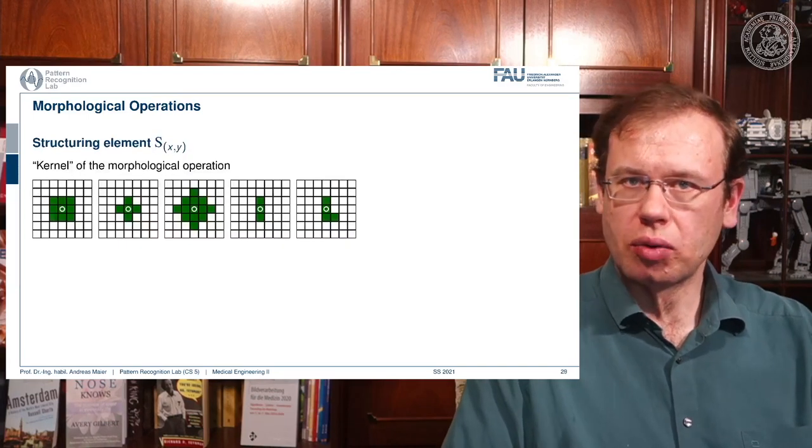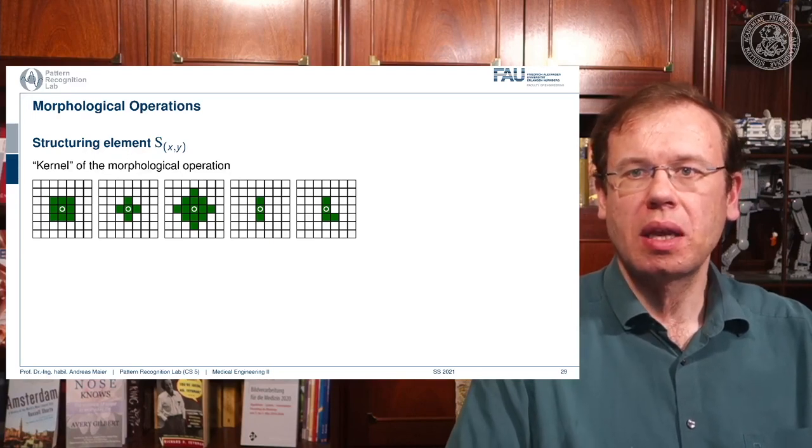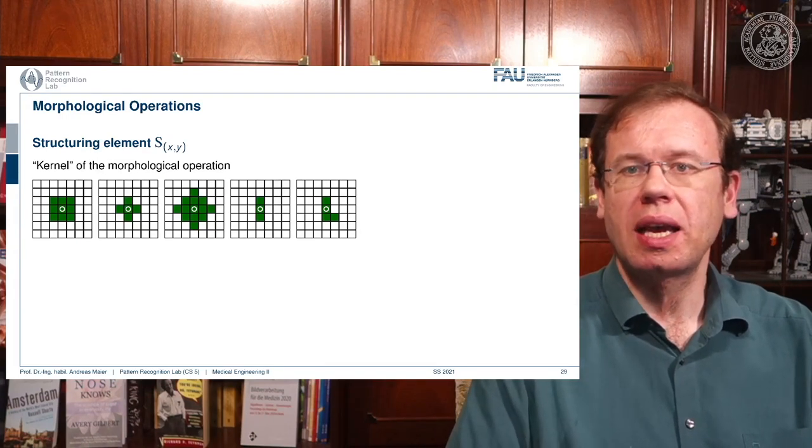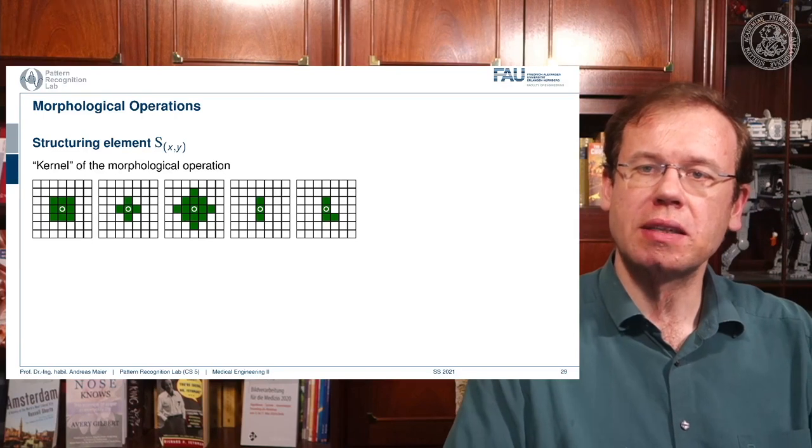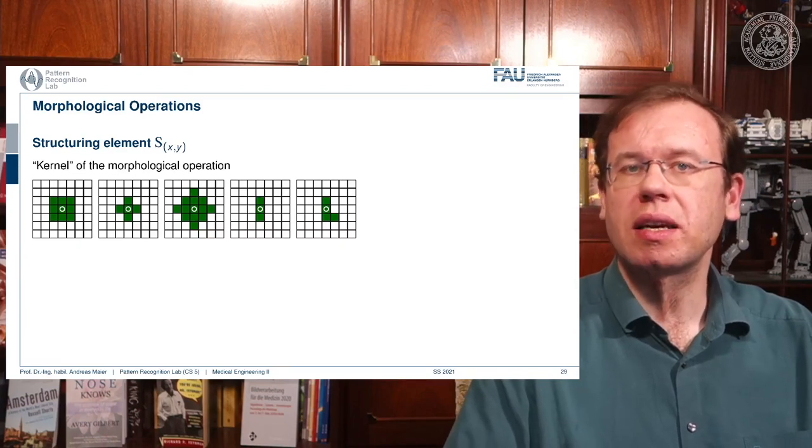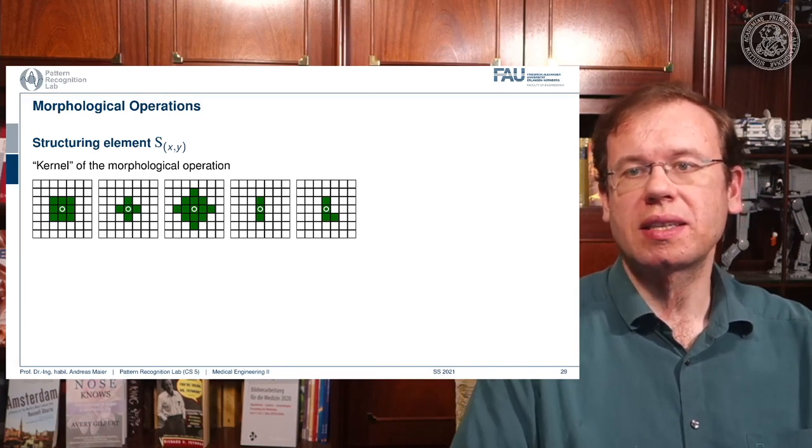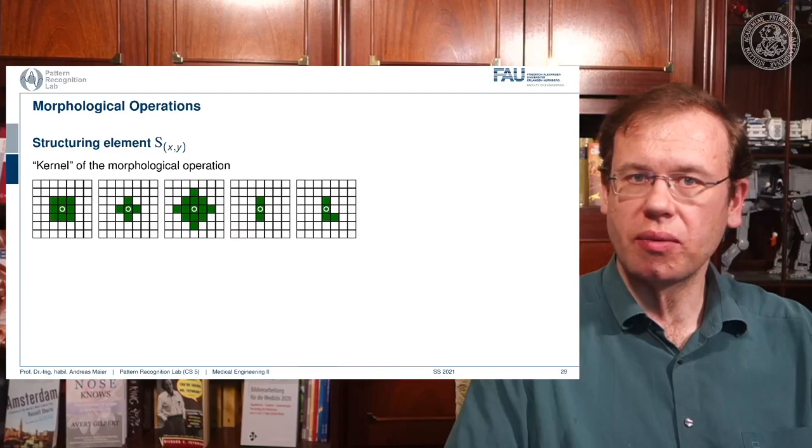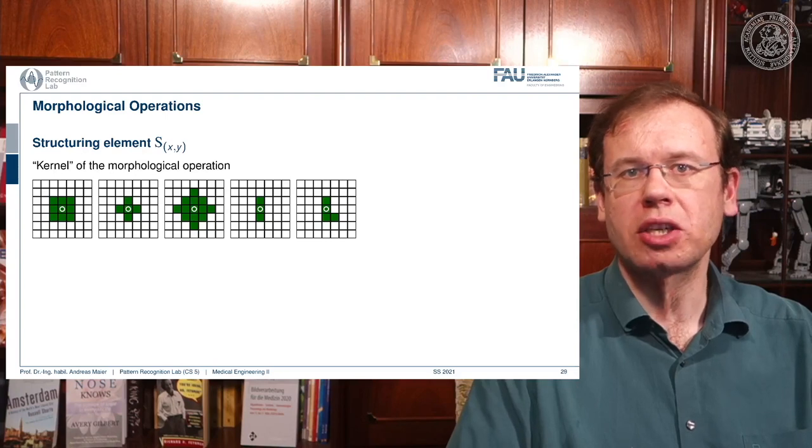Now the idea of the structuring element is to define a neighborhood in which you apply the operation. So here we have a couple of kernels, you could say the structuring elements. On the left hand side you see a three by three neighborhood, but you could also pick a neighborhood like this plus shape or the diamond shape, or you could even take structuring elements that are only in one direction or even in very strange elements like the one here on the right hand side which has this L kind of shape. They're determined by the purpose where you want to use them for. And if you use them, then you can go ahead and apply a specific operation on your image.